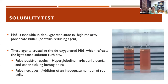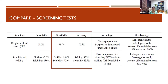The solubility test is another screening option. The principle is that hemoglobin S is insoluble in a deoxygenated state in a high-molarity phosphate buffer containing a reducing agent. Once insoluble, HbS crystallizes and refracts light, producing turbidity. A normal sample remains clear and lines behind it are readable, whereas a homozygous or compound heterozygous sickle sample shows turbidity and those lines become unreadable. Both tests have some limitations but overall have good specificity and accuracy.